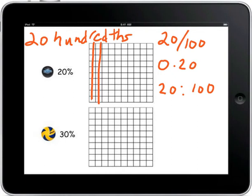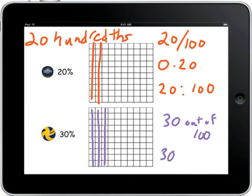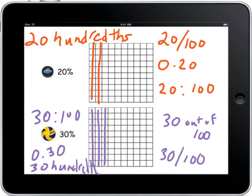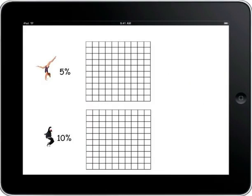When we move down to our 30 percent, we can look at this and say it's very close to the 20 again, except this time we have three rods colored in, which is the same as 30. So that would be 30 out of 100, meaning 30 over 100, a ratio of 30 to 100, and 0.30, meaning 30 hundredth.